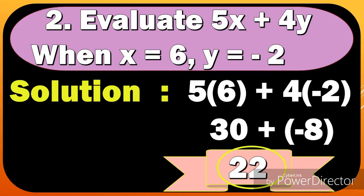Y is negative 2, so we have 4 times negative 2. 5 times 6 equals 30 plus 4 times negative 2 is negative 8. 30 plus negative 8 equals 22.